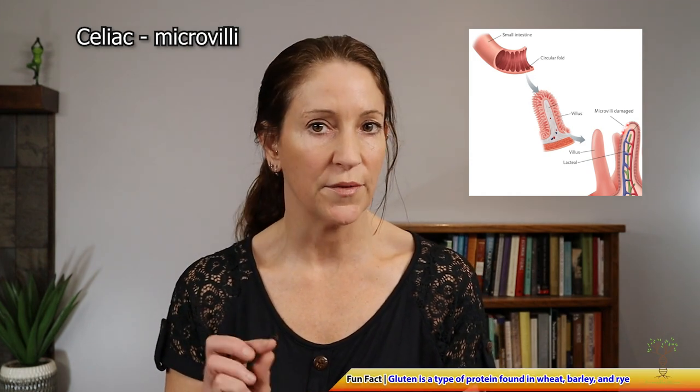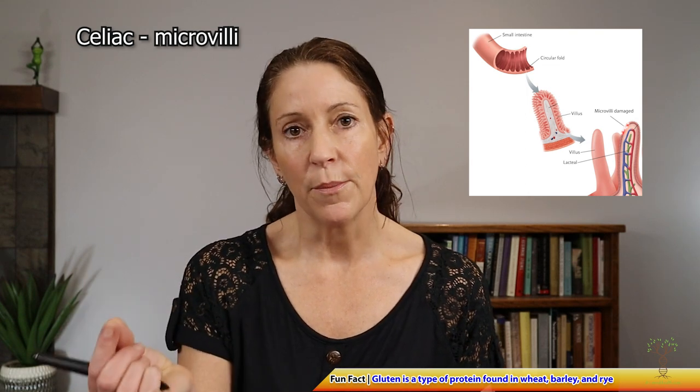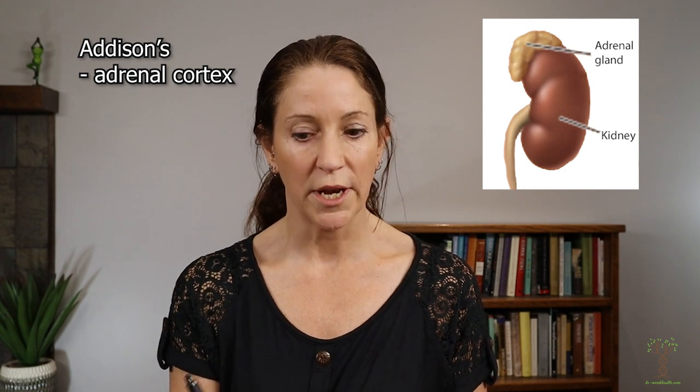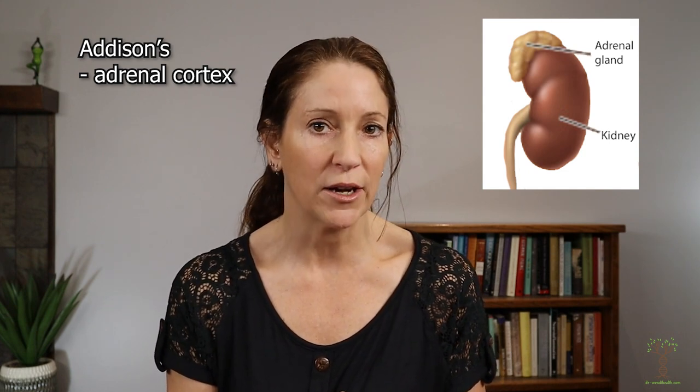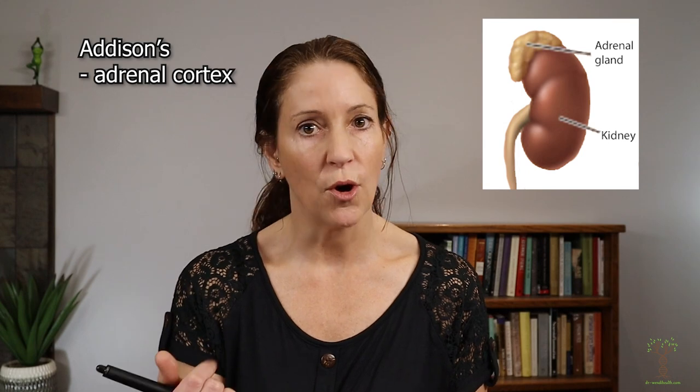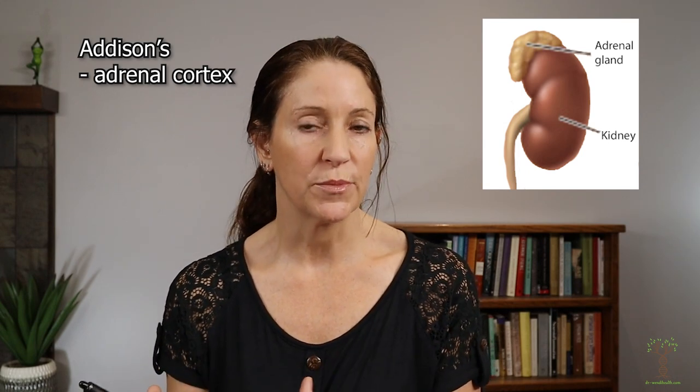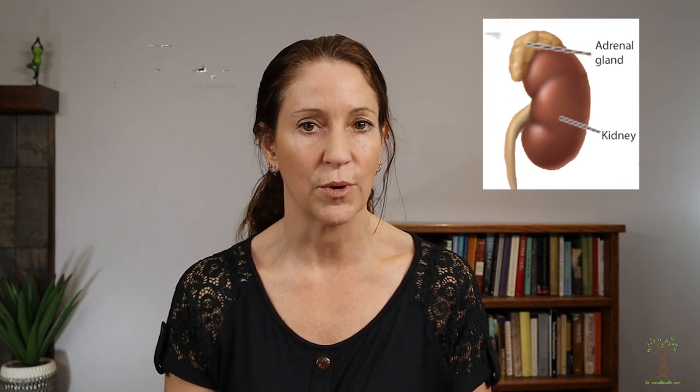With celiac disease, immune cells attack the epithelial lining of the small intestine with cross-reactivity to gluten, so people with celiac disease cannot eat gluten. Addison's disease is when the immune system attacks the adrenal cortex, which produces three major hormone categories: cortisol, DHEA, and aldosterone — so symptoms relate to those hormones.